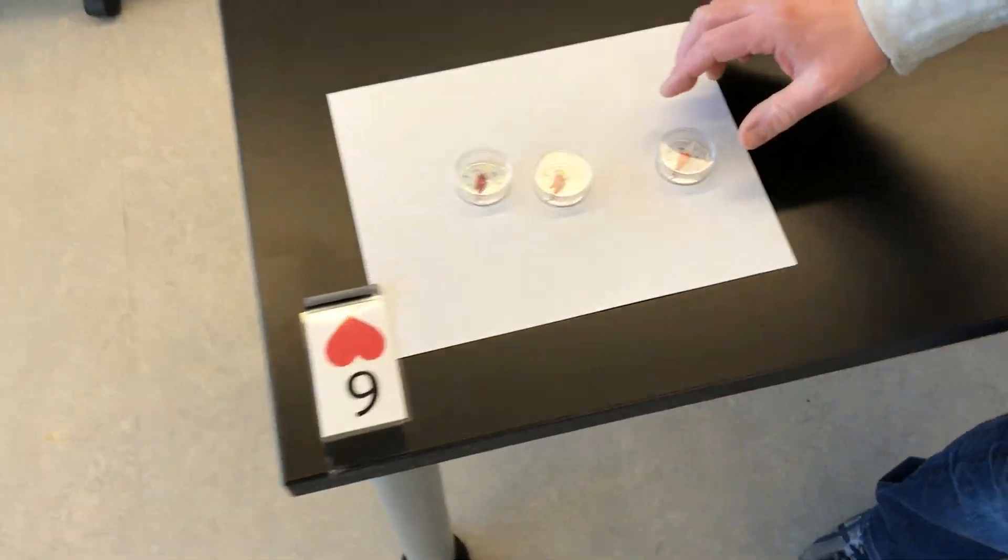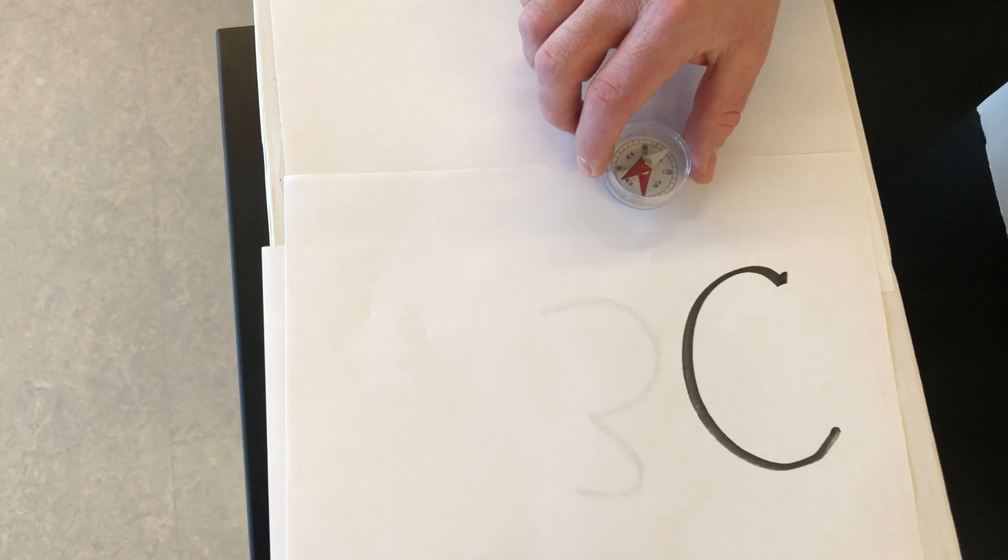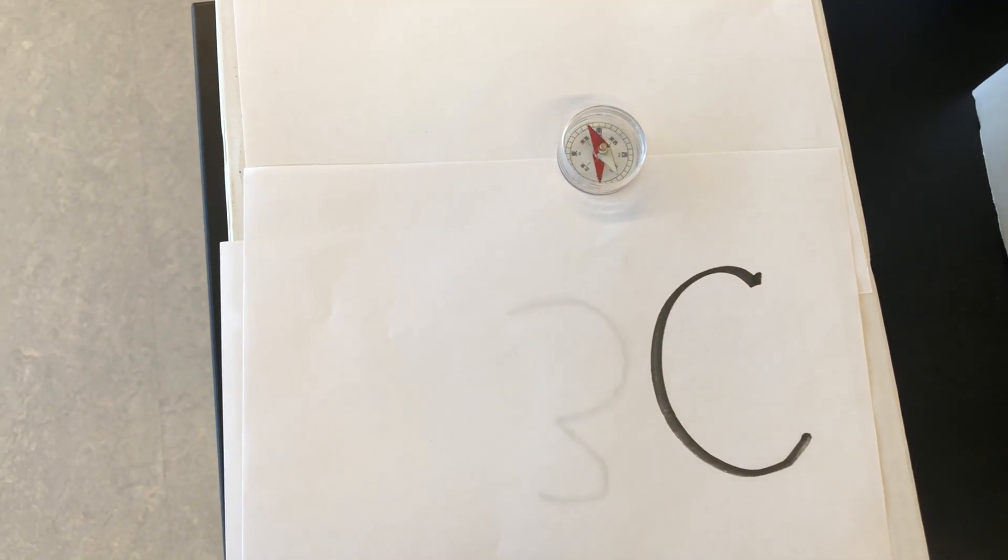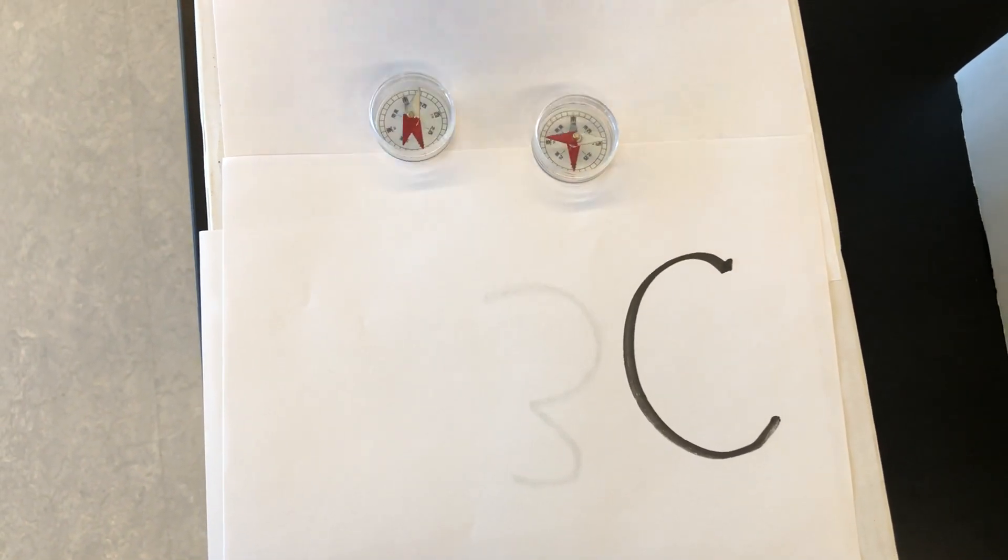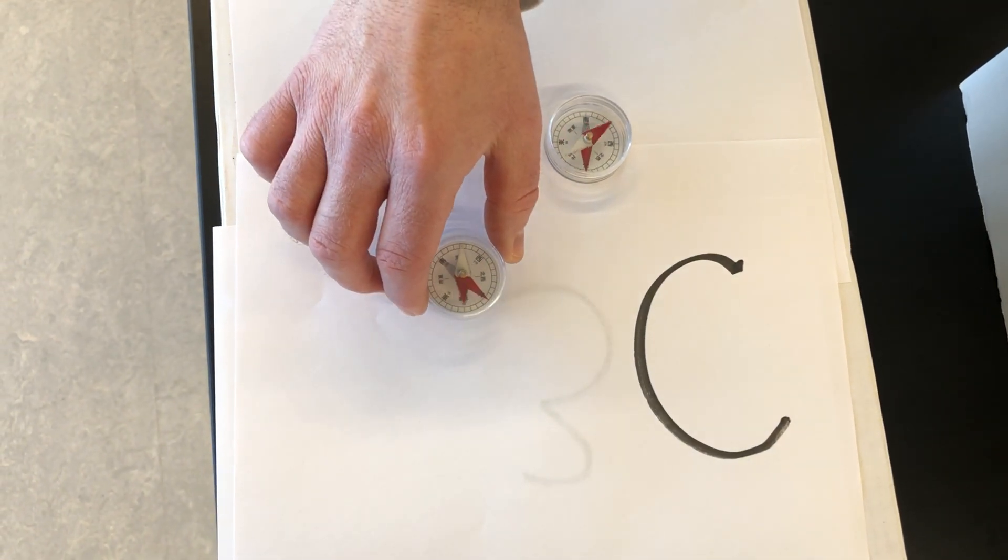Good, and now let's do Box C. Again, you can see all the compasses are pointing this way, and now we'll move them up under Box C and see what happens when we put them there. So we're making our observations as we do this. There's the first one, and put the second one there, and I'll put the third one here.